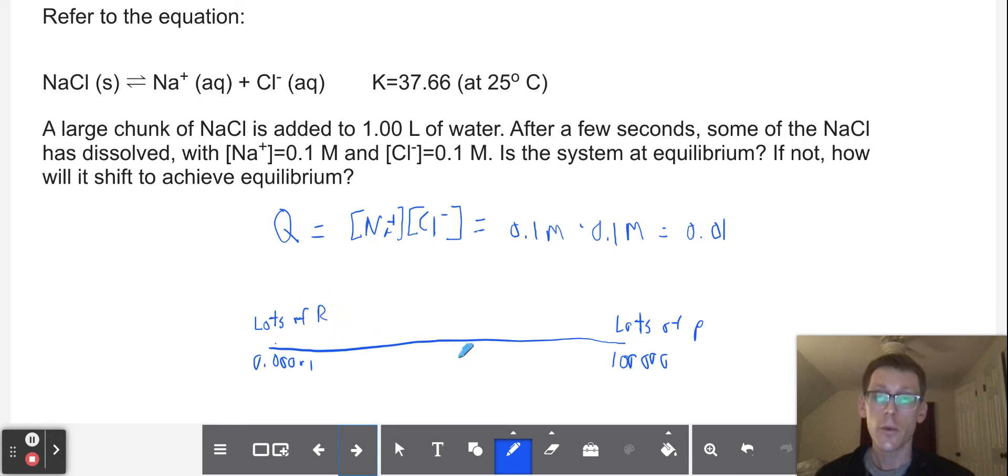If we're at here, which is 0.01, this is where we're at, we need to keep going towards the products in order to hit this 37.66 that is the equilibrium constant for this particular reaction. So we need to continue going rightward. We need to push towards the products.